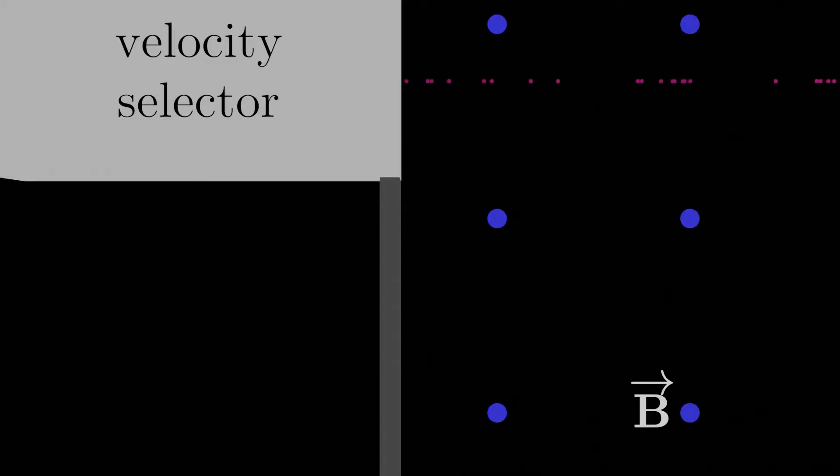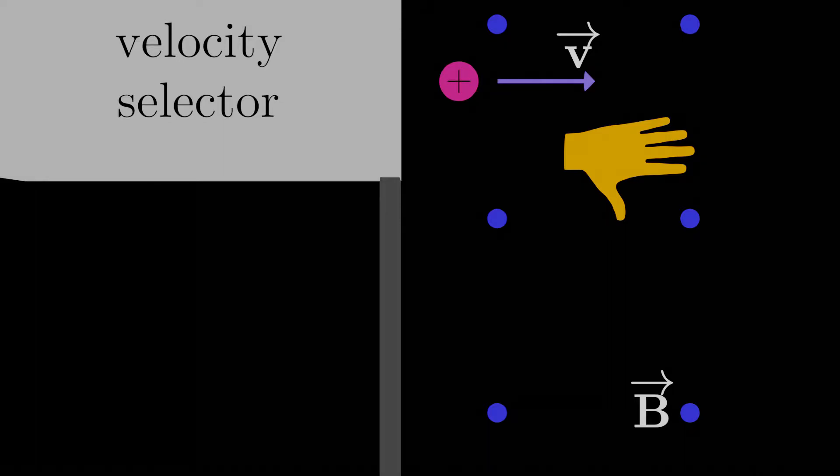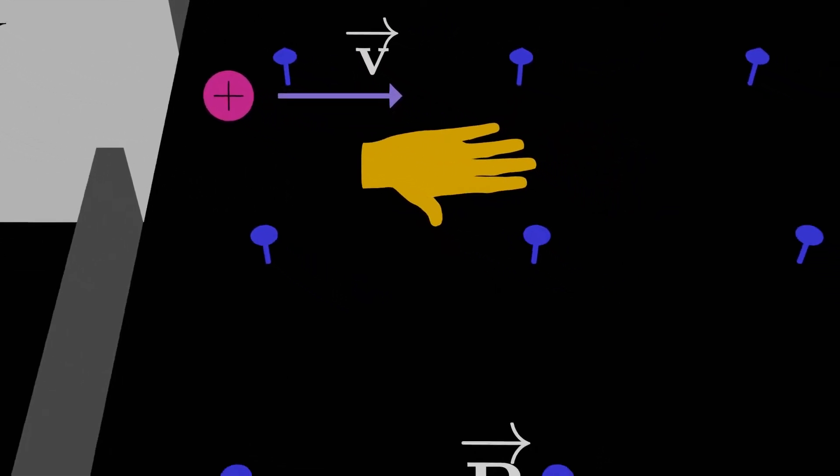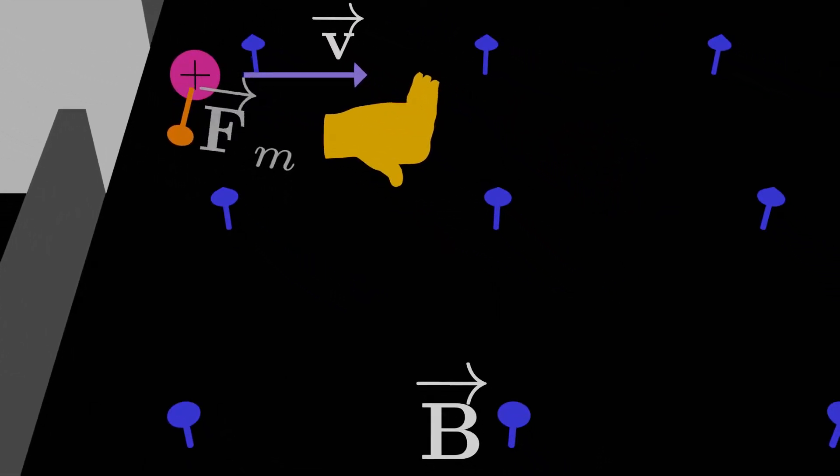Well in the absence of the electric field, a magnetic field is going to cause the charged particles that exit the velocity selector to deflect. How are they going to deflect? Well if the charged particles are positive, they're going to feel a magnetic force by the right-hand rule, pointing our right fingers in the direction of the velocity and curling them in the direction of the magnetic field, which is out of the screen here, has our thumb point downwards, which is the direction of the force.